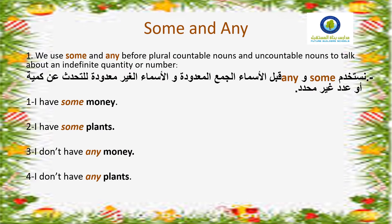Some and any. Number one: we use some and any before plural countable nouns and uncountable nouns to talk about an indefinite quantity or number — that is, a number of things or quantity of things where we don't know the exact number. As you can see in example one: I have some money. Here, the noun money is uncountable, so we use some.